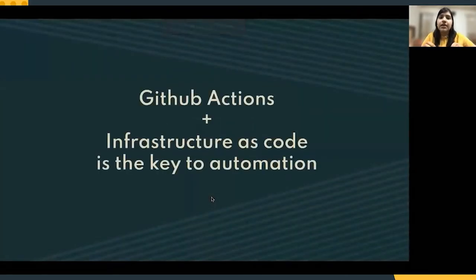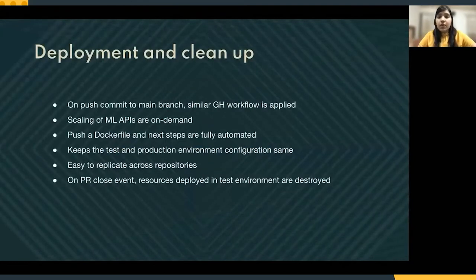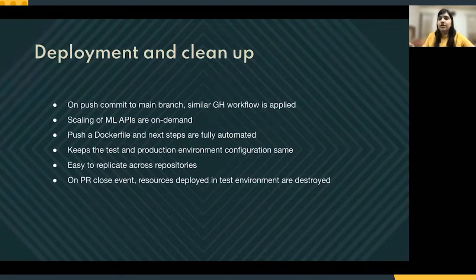The key takeaway is that GitHub Actions plus infrastructure as code is the key to automation in this pipeline. And it's not just GitHub Actions — if you're using Travis CI or Jenkins for CI, you can use those too. Just make sure all your infrastructure is written as code so it can be replicated across environments. Once deployment is done, in our case, the scaling of ML APIs is on-demand — based on the number of requests, the API scales itself, so we don't pay for resources that aren't being utilized.